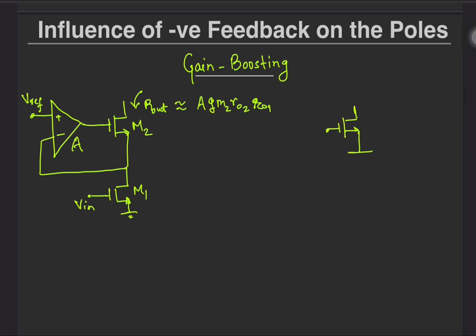We have this simple current source but the problem here is that as the drain voltage in the transistor varies, so does its current.